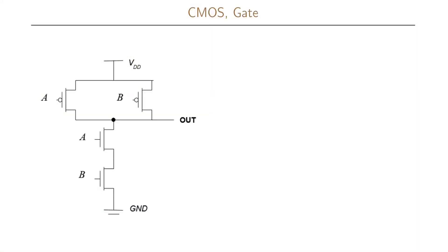Let us now look at an implementation of a gate. On the top we have the power supply and on the bottom we have ground. We have two P-type transistors that are in parallel and two N-type transistors that are in series. We have two inputs: input A is connected to both the gate of a P and an N transistor, and input B is connected to both a P and an N transistor. Here we have the output of our gate.